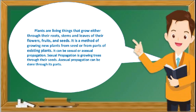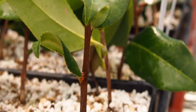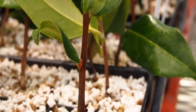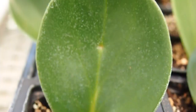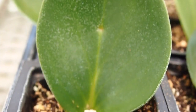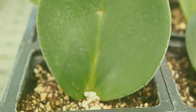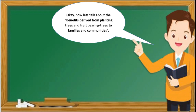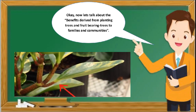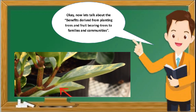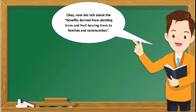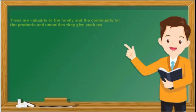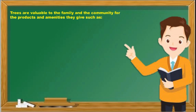Plant propagation is a method of growing new plants from parts of existing plants. It can be sexual or asexual propagation. Sexual propagation is growing trees through their seeds, while asexual propagation is done through other plant parts. Trees are valuable to the family and the community for the products and amenities they provide.